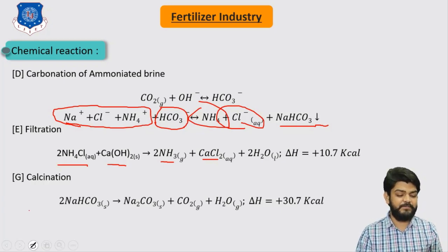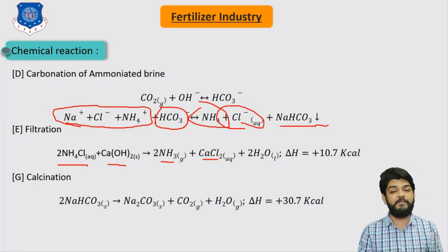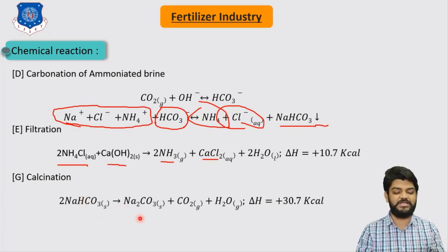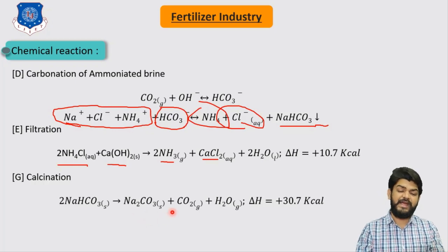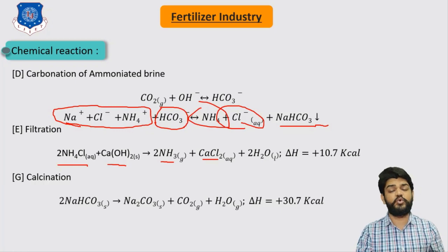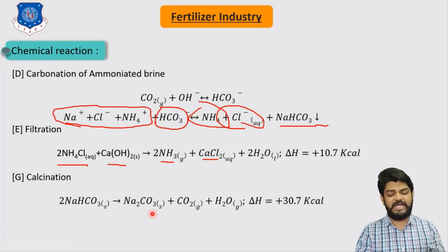The last step is calcination. The precipitate of sodium bicarbonate is calcined in a calcinator to produce sodium carbonate. As shown, 2 moles of sodium bicarbonate are calcined to produce Na2CO3. Carbon dioxide and water are also liberated as byproducts of this reaction.